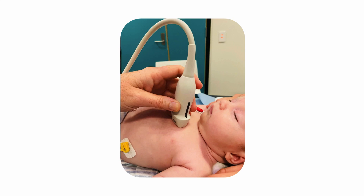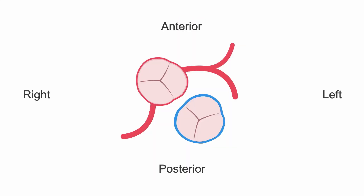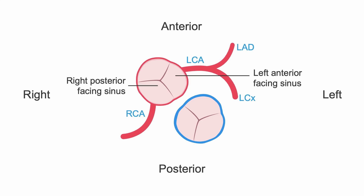The parasternal short axis view with a slight clockwise rotation of the probe allows for the coronary arteries to be visualized. In this view, it's possible to see the orientation of the left and right coronary arteries. The usual arrangement in TGA is the left coronary artery (LCA) arises from the left anterior facing coronary sinus and bifurcates to the left anterior descending artery (LAD) and the left circumflex artery (LCX). The right coronary artery (RCA) arises from the right posterior facing coronary sinus and continues to the right.